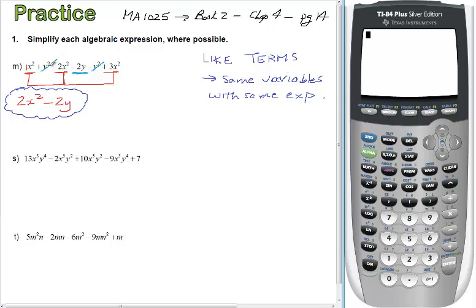The next one, S. Must have the same variable with the same exponent. Is there another one that has X to the 5Y to the 4? I see one over here, X to the 5Y to the 4. So these are like terms. We combine those two together to give us one term. You just add or subtract the coefficients. We're doing 13 subtract 9, which of course is 4. The very first two combine to give you 4X to the 5Y to the 4.